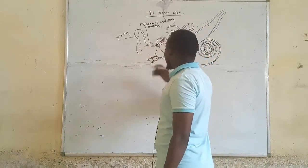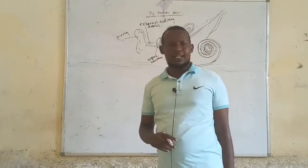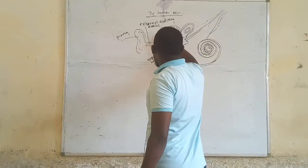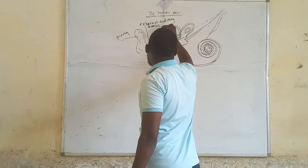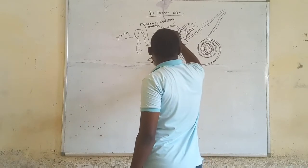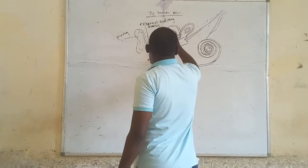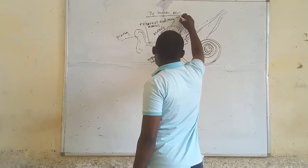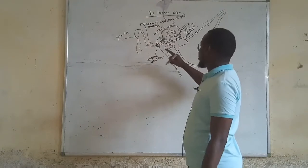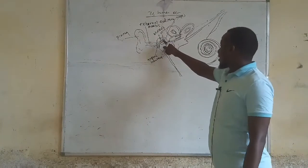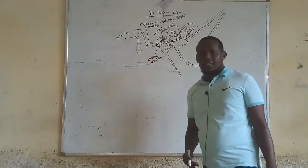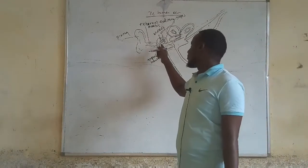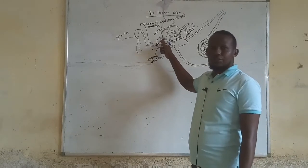Lying next to the tympanic membrane are three bones — the ear ossicles. The first one is the malleus, then the incus, and the stapes. There are three bones that lie adjacent to each other, and the vibrations from the tympanic membrane are picked up by the first ossicle, the malleus, and then in turn picked up by the incus, and then the third bone, the stapes.